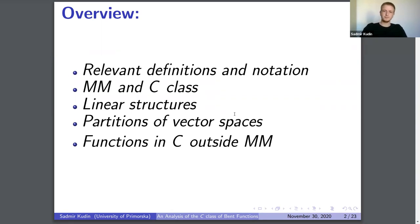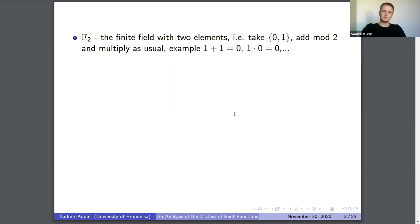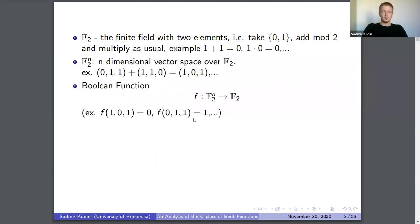F2 denotes the finite field with two elements — zero and one — where everything is the same as natural numbers except that one plus one equals zero. F2 to the n is an n-dimensional vector space over F2. A boolean function in n variables is just a function from F2^n to F2.